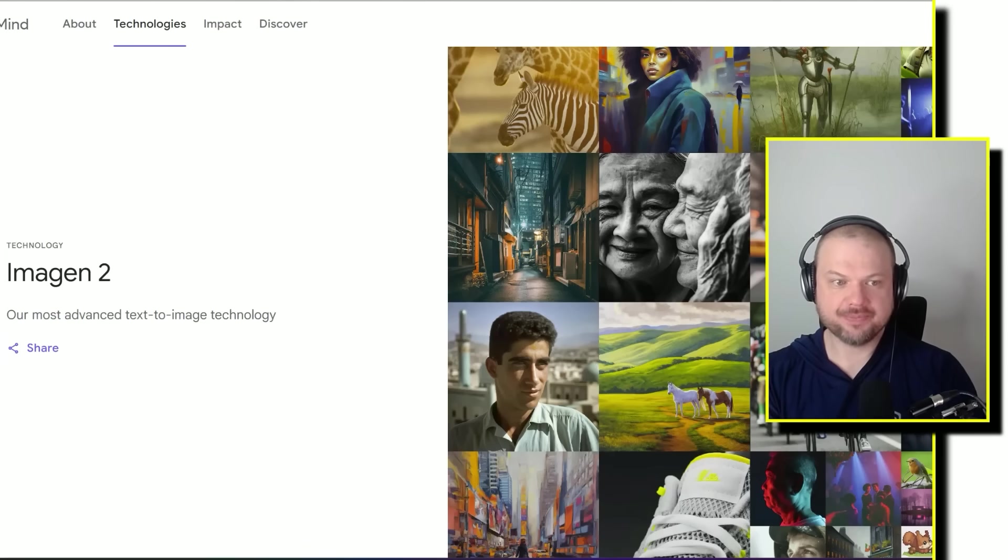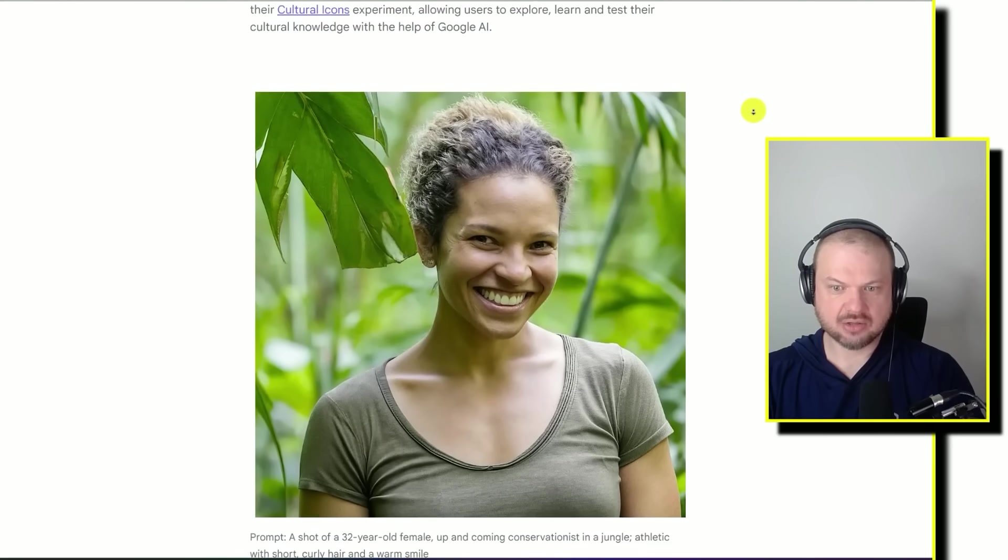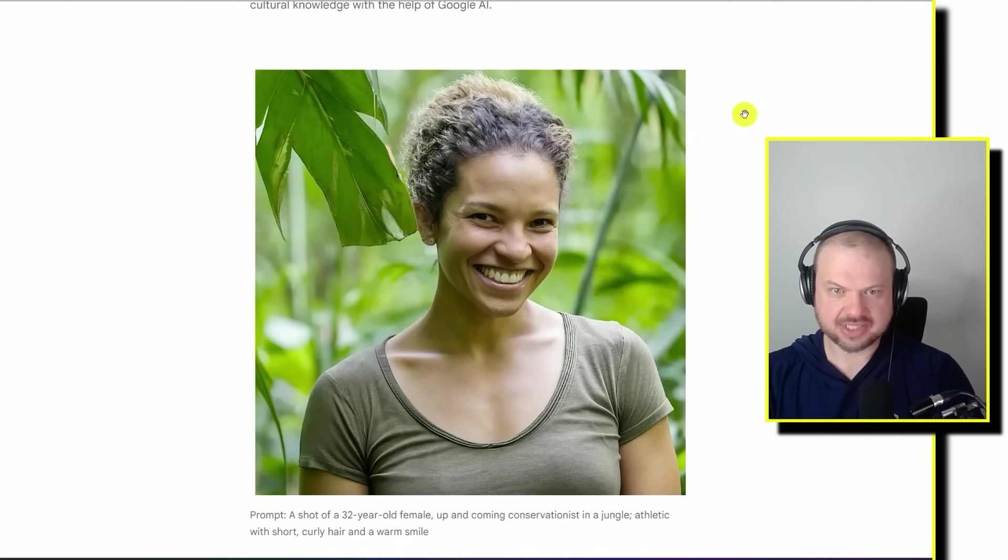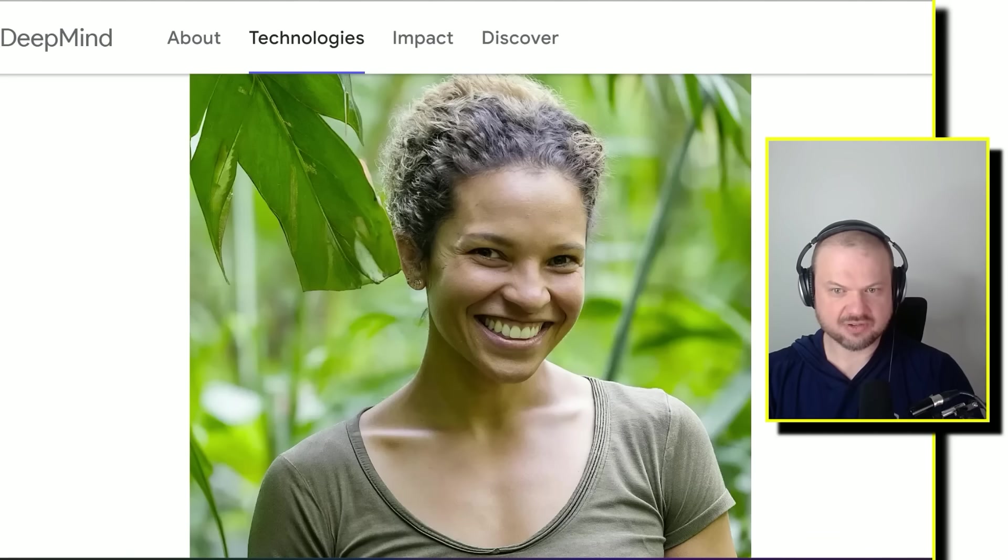Google DeepMind drops Imagen2, their most advanced text to image technology. And some of these images are extremely realistic. I think I would be hard pressed to find any faults with it. I mean, there's certain things that I could point to. Maybe this area is a little bit weird, kind of the area here, but I could not call this an AI generated image. There's nothing here to really give it away.